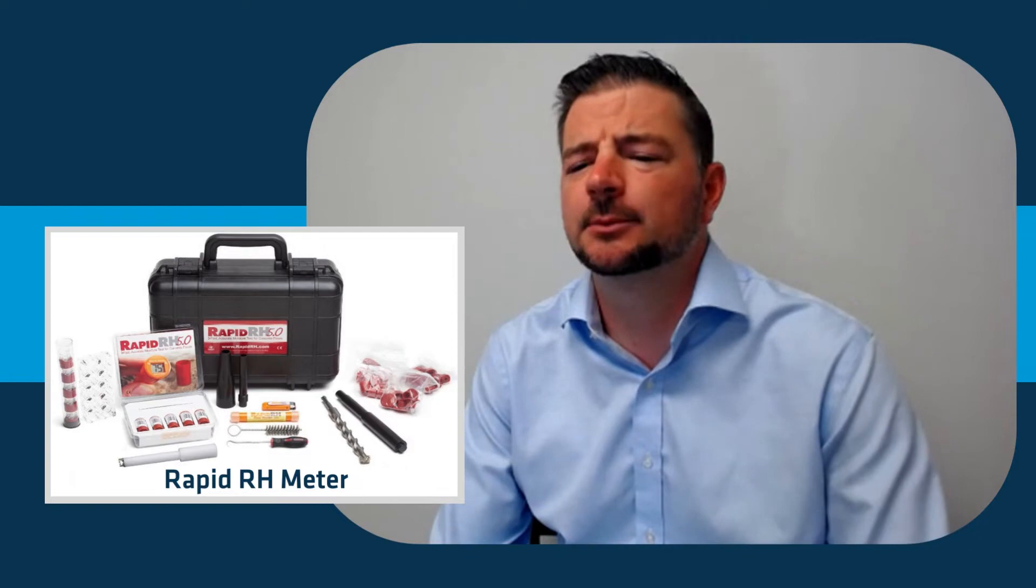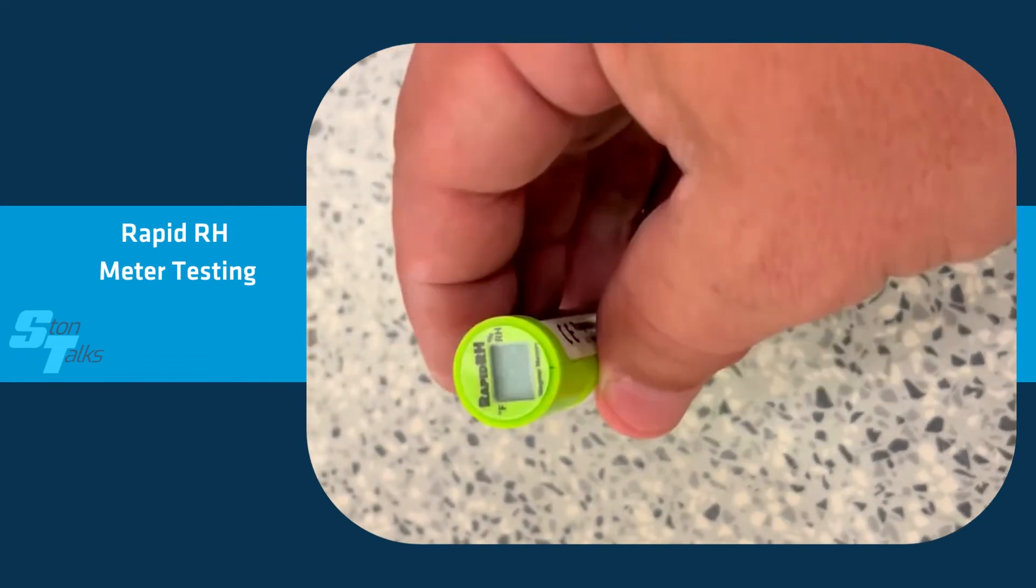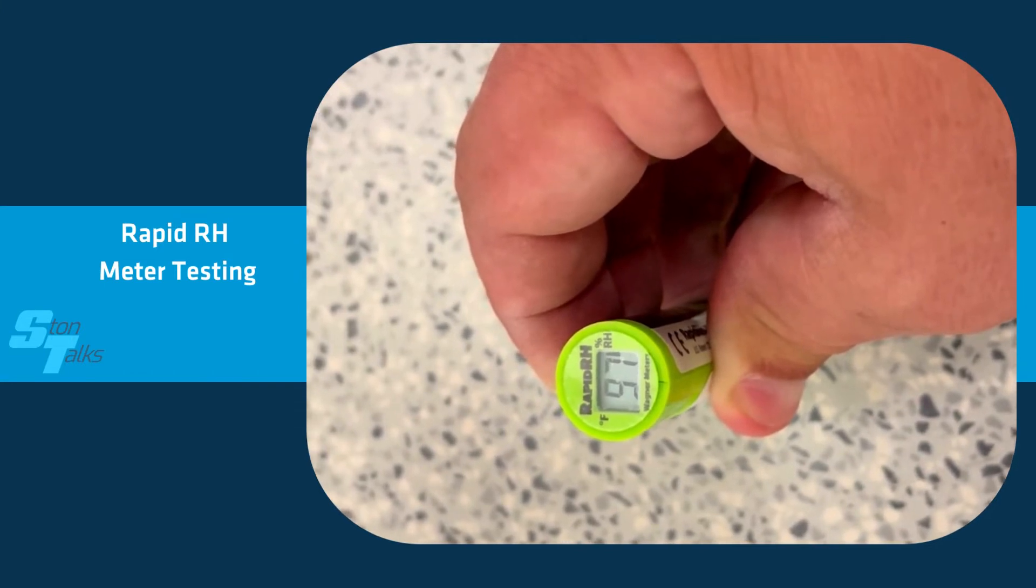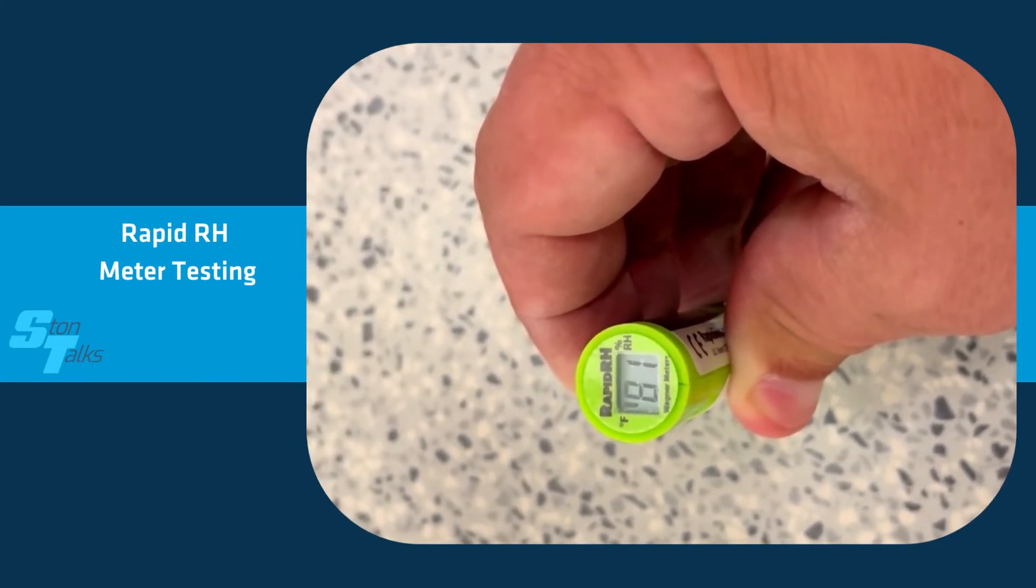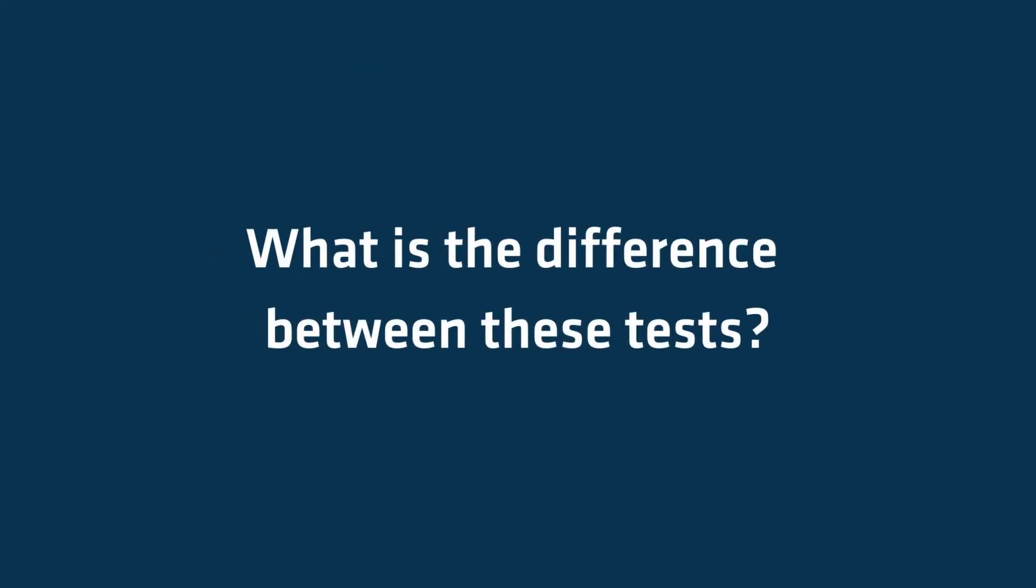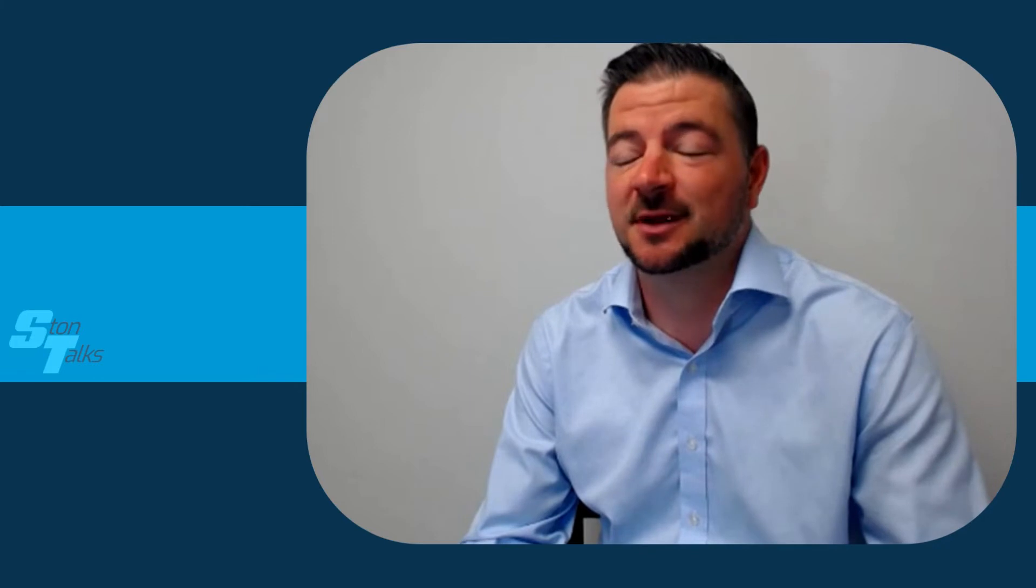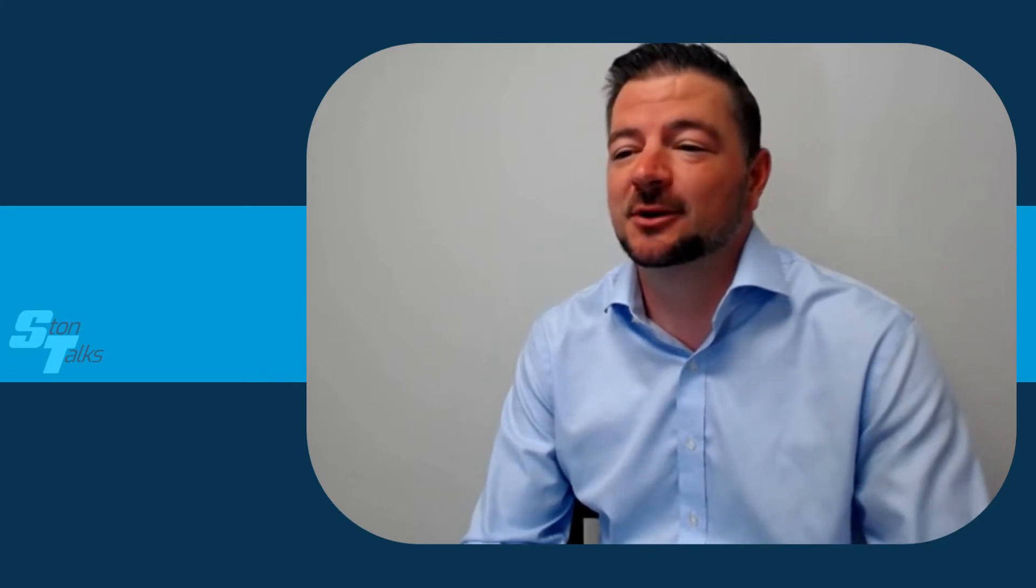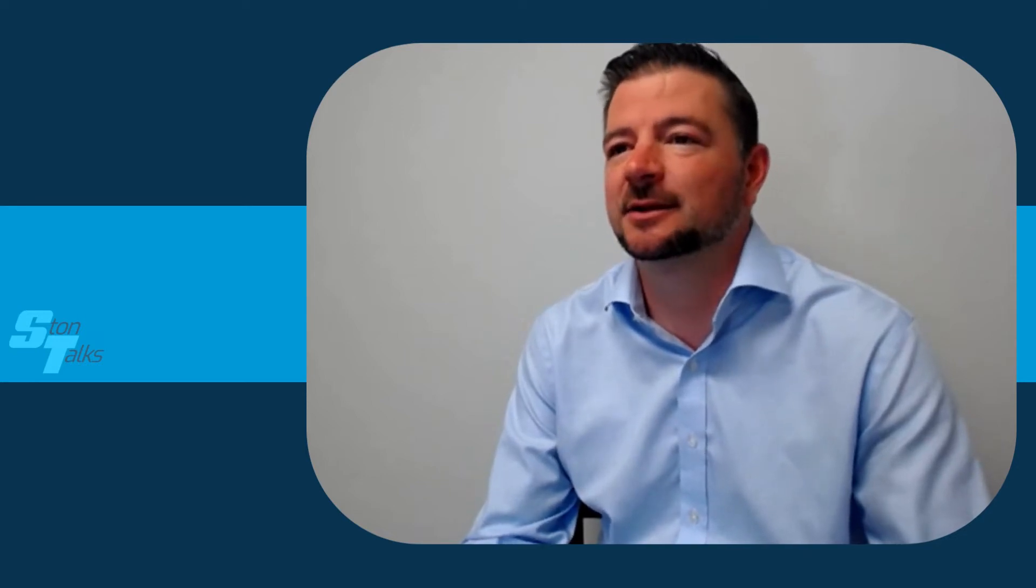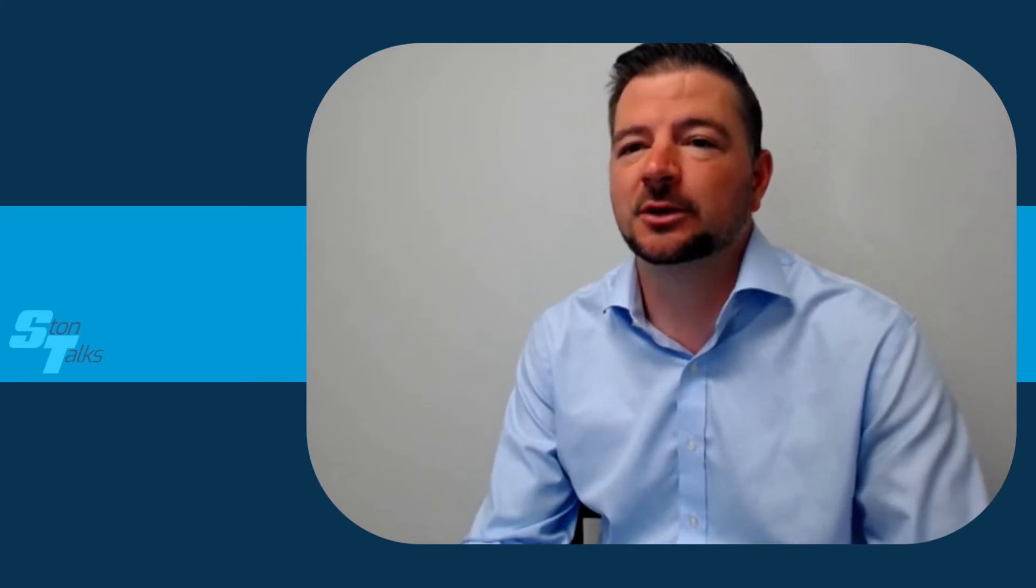A lot of times in the industry, when you're trying to let something sit under a plastic container for 72 hours, you'll have other trades or forklifts that can knock into that thing and ruin your test. Whereas the RH test is immediate and it's in the concrete, so you can put a little cap on it.